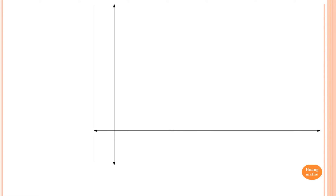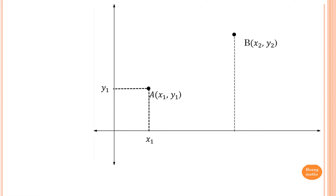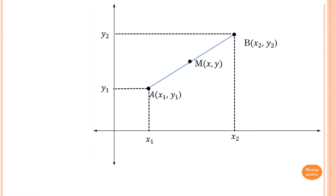Let's say there are two points, point A and point B. Point A has coordinates x1, y1, and point B has coordinates x2, y2 — x2 along the x-axis and y2 along the y-axis. We want to find the midpoint of A and B, which we call capital M. The midpoint M has coordinates (x, y), so we need to find the values of x and y.